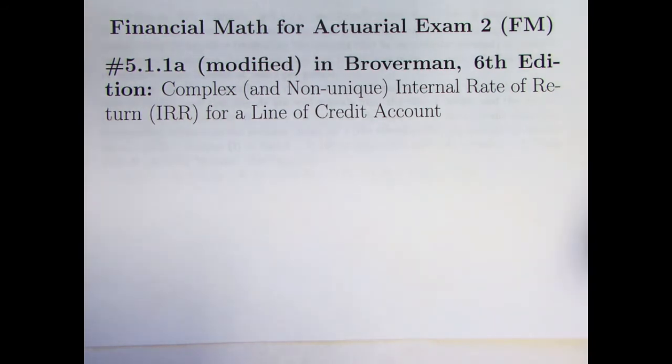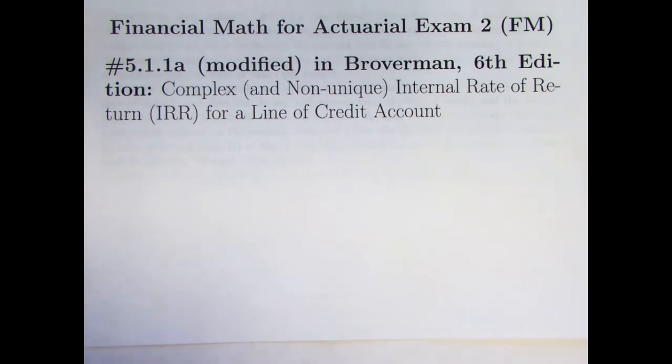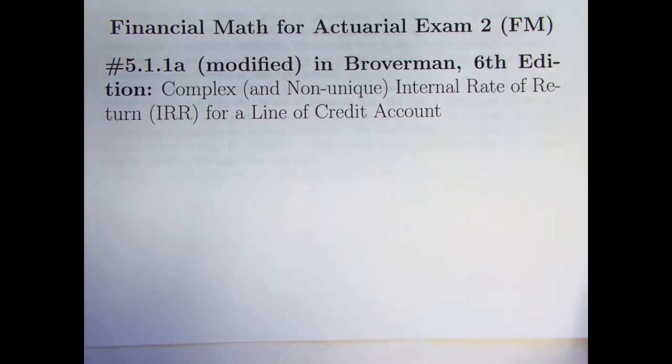I went more slowly over the problem statement in that video. I'm going to go very fast over the problem statement in this video, very fast overall. So you're definitely going to benefit if you watch video 121 first. In this video, something strange happens. We're after an internal rate of return for certain transactions for a line of credit account. And it's going to turn out that our internal rates of return, non-unique ones, are going to be complex numbers, non-real, involving the imaginary unit. Very, very strange.